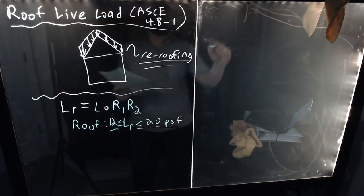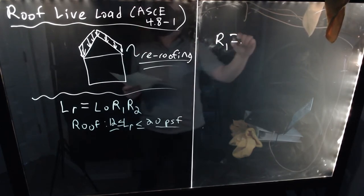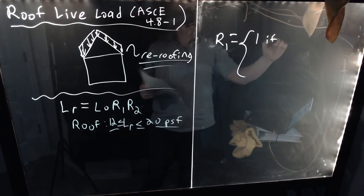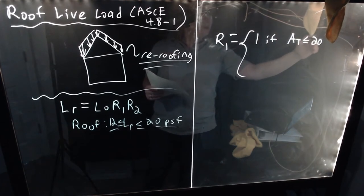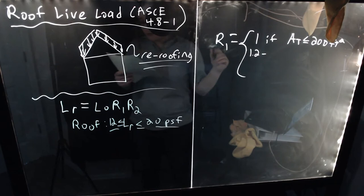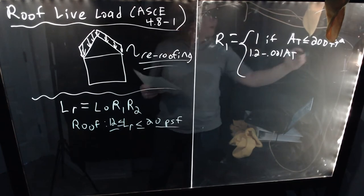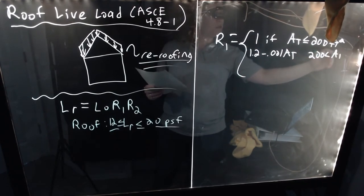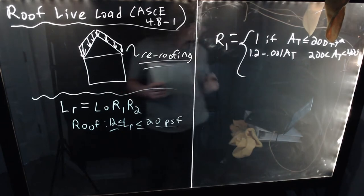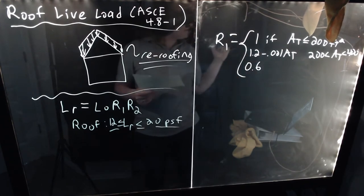Now, in terms of R1 and R2, these are coefficients that are used in the calculation. So R1, and there's just a piecewise function defining each of these. So it's going to be equal to 1 if your tributary area is less than or equal to 200 feet squared, and it's going to be equal to 1.2 minus 0.001 times your tributary area if AT, the tributary area, is between 200 and 400.